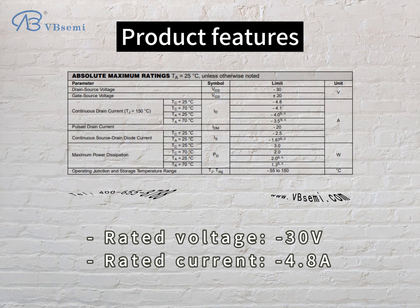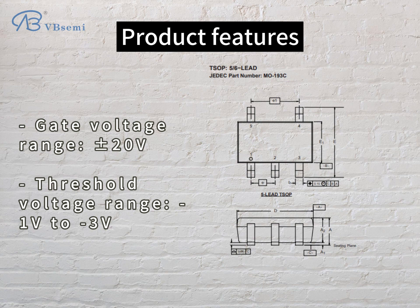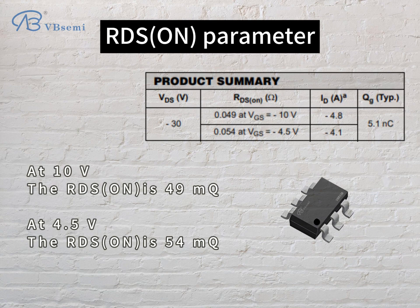Rated voltage: -30V. Rated current: -4.8A. Gate voltage range: ±20V. Threshold voltage range: -1V to -3V. RDS-ON parameter: at 10V, the RDS-ON is 49mΩ; at 4.5V, the RDS-ON is 54mΩ.